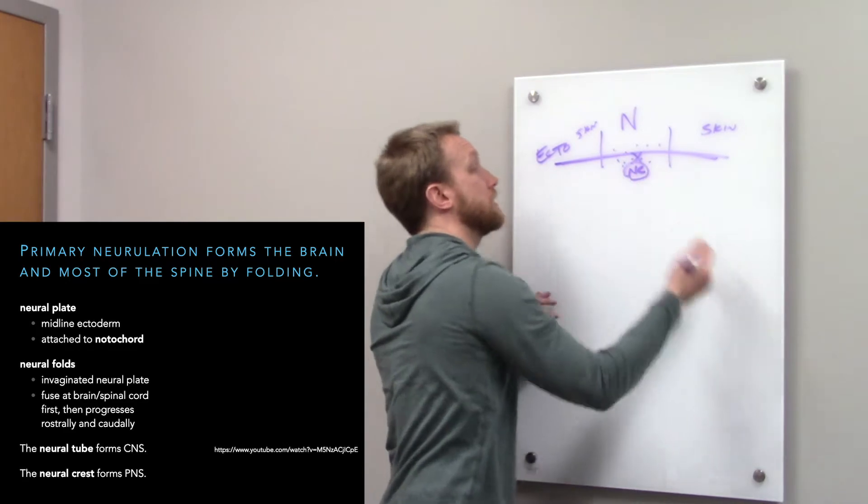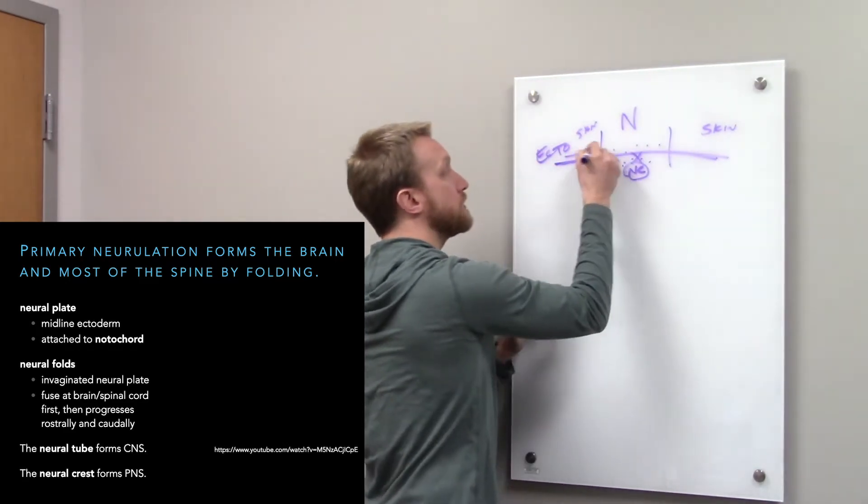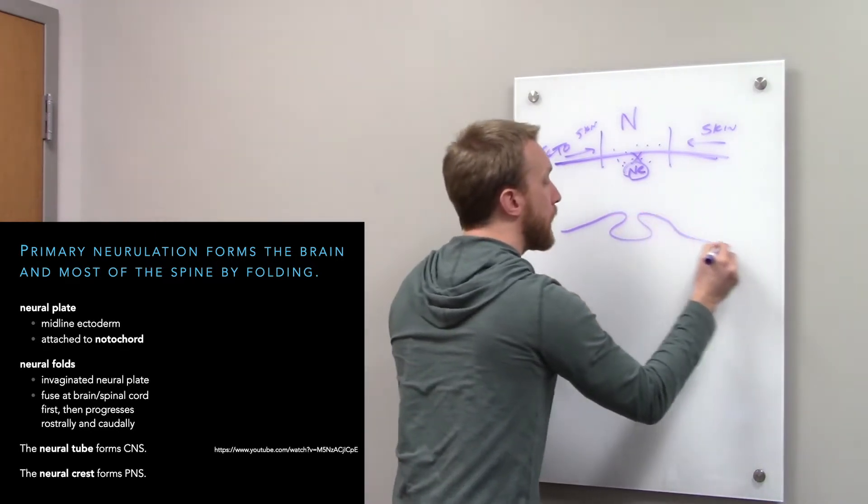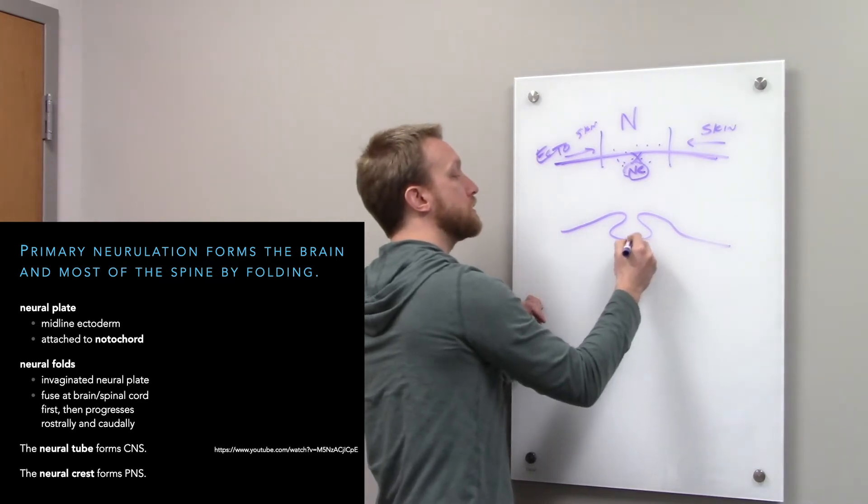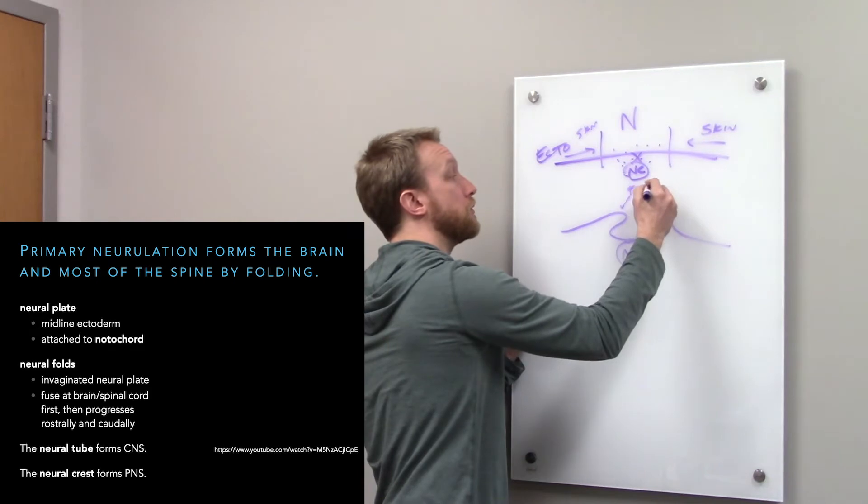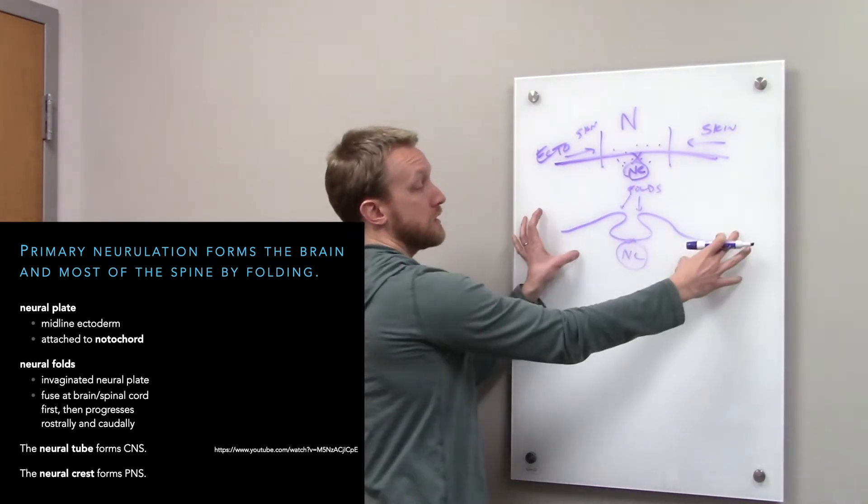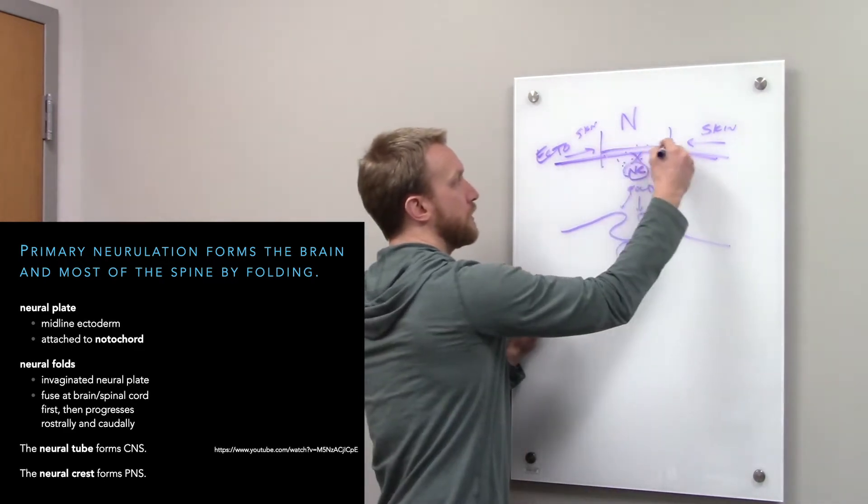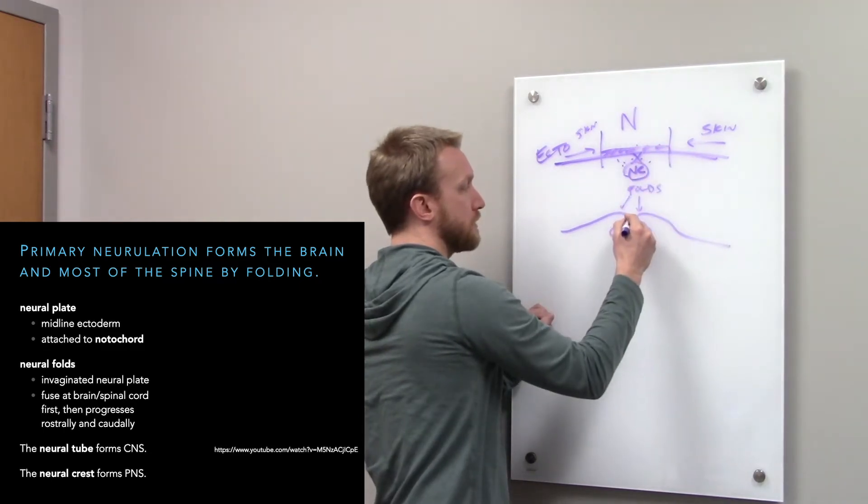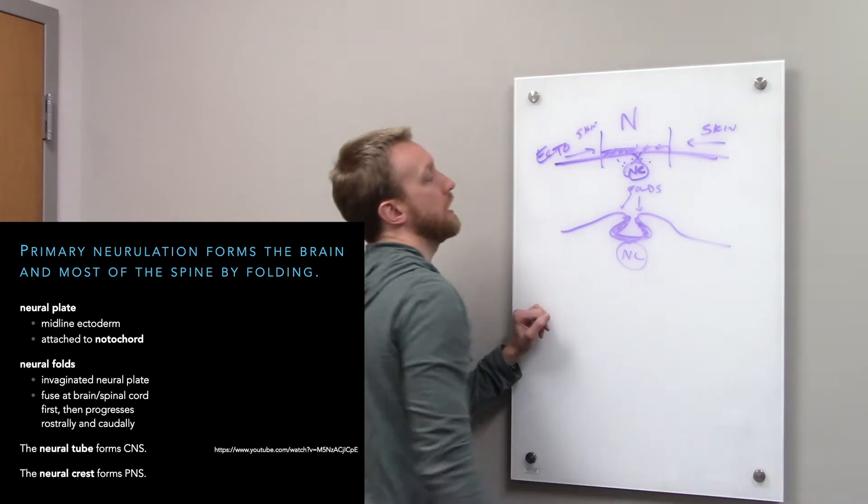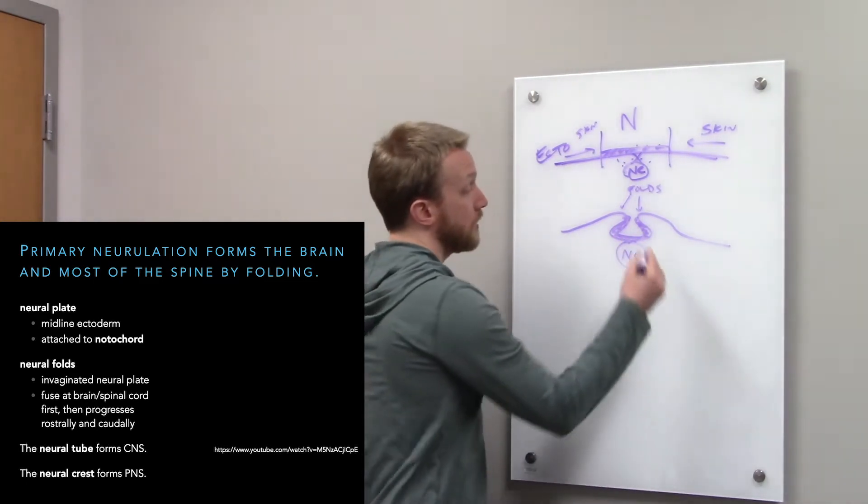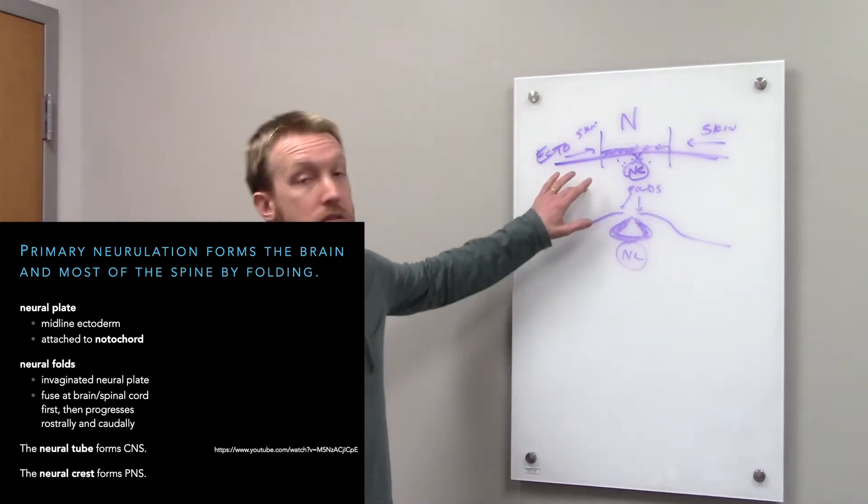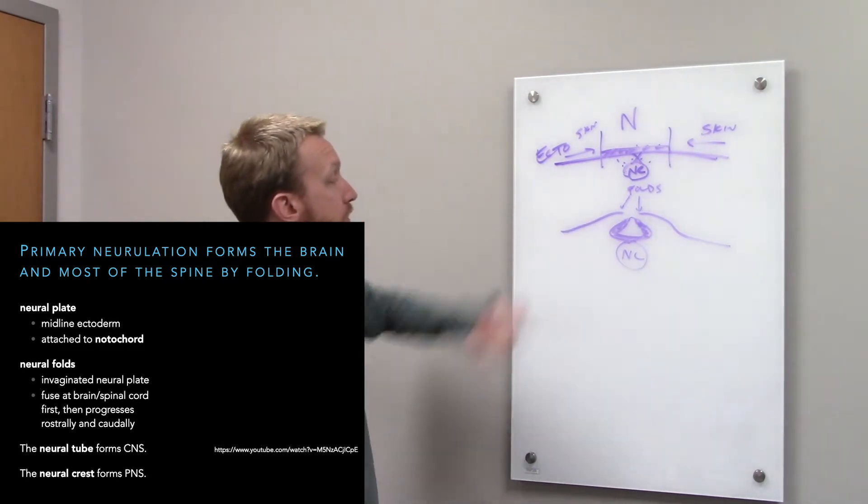The notochord is also attached. So when we have that inward migration of cells, instead of sliding around, the ectoderm bunches up. Here's my notochord still right there. Here's my neural folds. This is the neural groove. Now we need to do a little cut and paste. We're going to sever the connection between the future nervous system and the skin, fuse the nervous system to itself and the skin to itself.